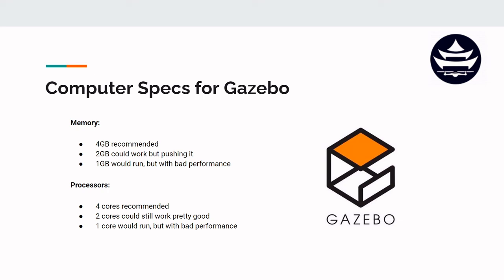Gazebo does require a decent amount of computer hardware. For memory or RAM, I would recommend four gigabytes — that's kind of the sweet spot. I've tested it with two gigabytes of RAM and it works, though it's pushing it a little bit, getting maybe 70% of the performance. At one gigabyte it still runs, but with pretty bad performance — the simulated world plays at maybe 20% of real-time speed, so it looks like everything's moving in slow motion.